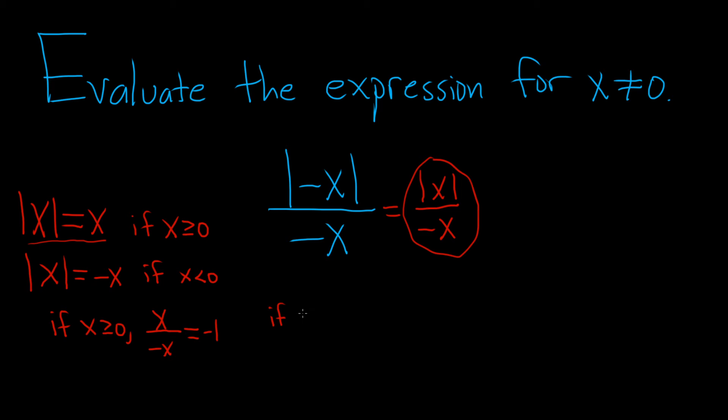If x is less than 0, then the absolute value of x is negative x. So again, focusing on this piece here, we'll have the absolute value of x over negative x. But then the top piece is just negative x, so it's negative x over negative x, and so that's equal to 1.